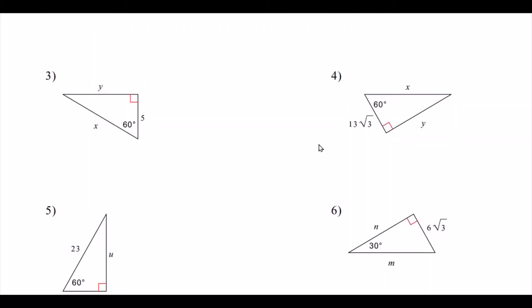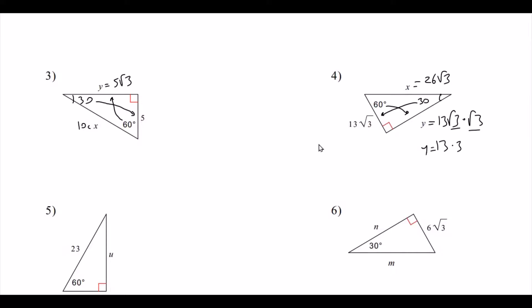Problem 3: identify the angles — this is our 30°, so we're given across 30°. The hypotenuse is double, which is 10, and across 60° is 5√3. Problem 4: given across 30°, the hypotenuse is double, which is 26√3, and across 60° is 13√3 × √3 = 13 × 3 = 39.